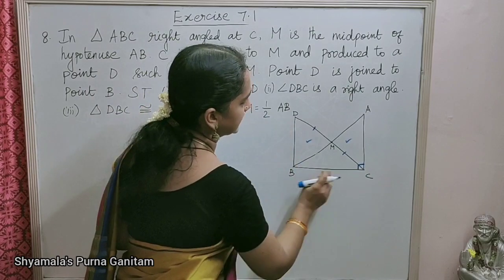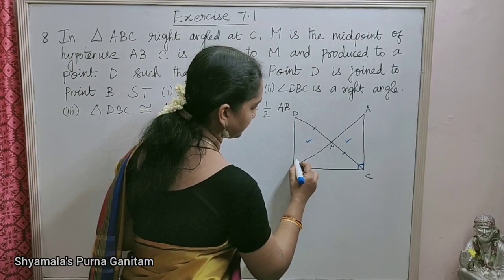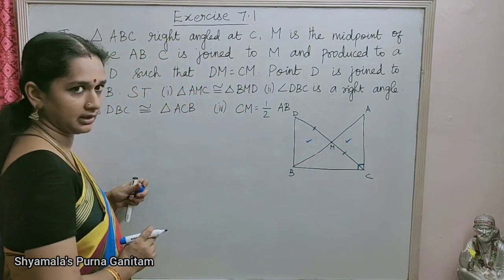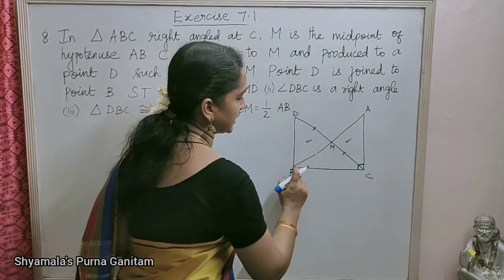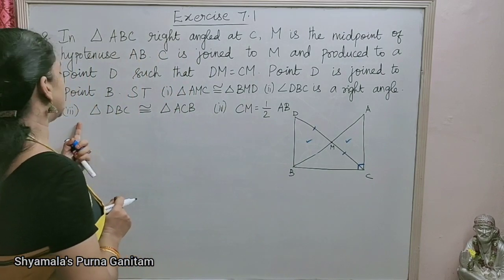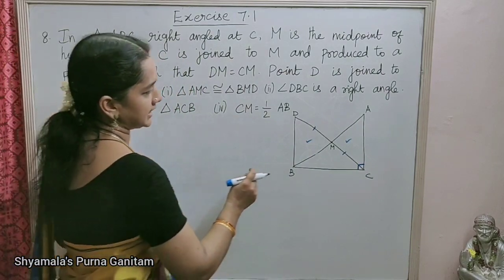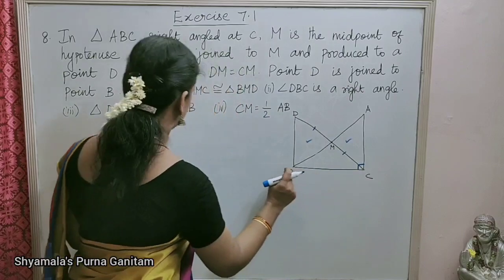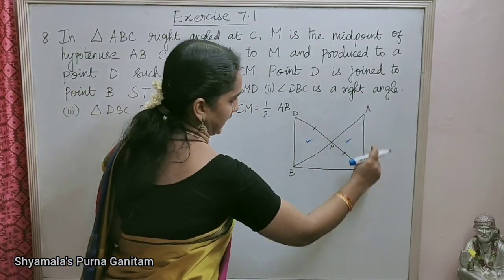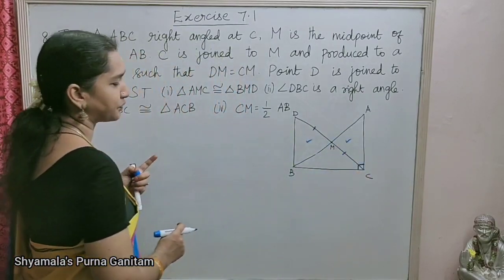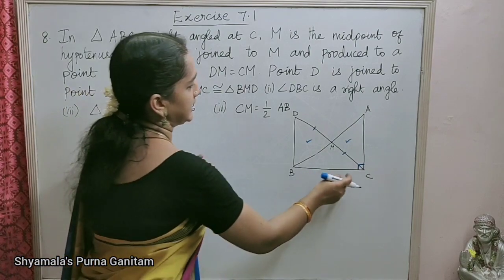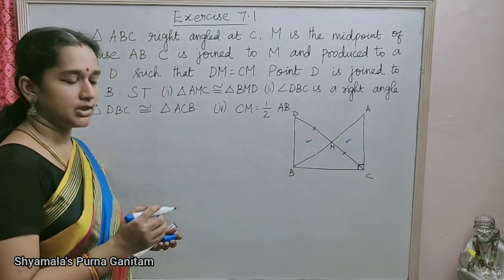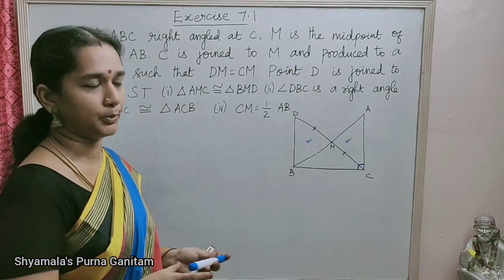We also need to prove: angle DBC is a right angle; triangle DBC is congruent to triangle ACB; and CM is equal to half of AB. So there are four things to prove. We begin with triangle AMC and triangle BMD.